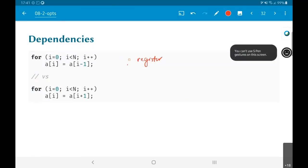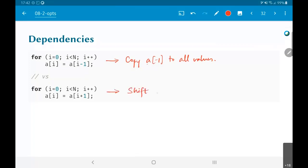Going forward in the dependencies, if I do a[i] = a[i-1] in the first case, what I'll actually end up doing is copy a[-1] to all values. Because a[0] will get the value of a[-1], after that i will become equal to 1, which means a[1] will become equal to a[0] which is a[-1], and so on.